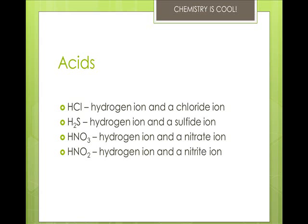If the anion has an oxygen in it and it ends in -ITE or -ATE, you change the names as well. If it ends in -ATE, you change the suffix to -ic acid. So the first one is hydrogen ion and a nitrate ion — it ends in -ATE, so you change it to -ic acid, and it becomes nitric acid. If it ends in -ITE, you change the suffix to -ous acid. So it's nitrous acid for the fourth one.